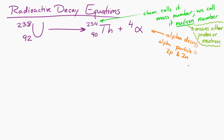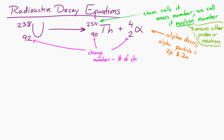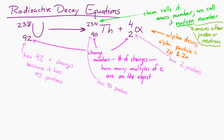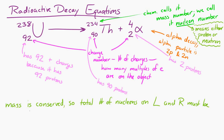The lower number — so the 92 in the lower left by the uranium, the 90 by the thorium, and the 2 by the alpha — that's the charge number. It tells you the number of charges, or how many multiples of the fundamental charge e exist on that object. Uranium has 92 positive charges because it has 92 protons. Thorium has 90 positive charges, and the alpha particle has 2 positive charges. If mass is conserved, the total number of nucleons on the left and on the right — before and after the reaction — must be the same.